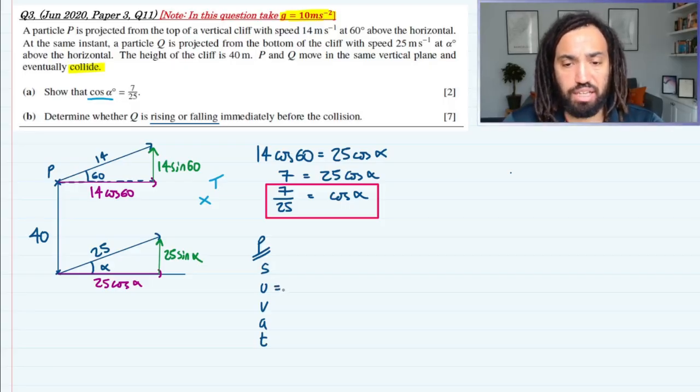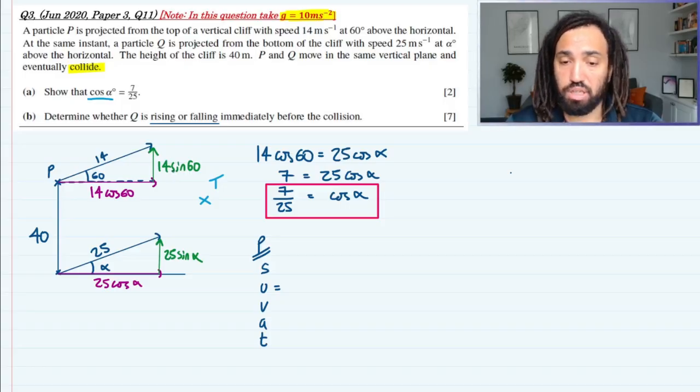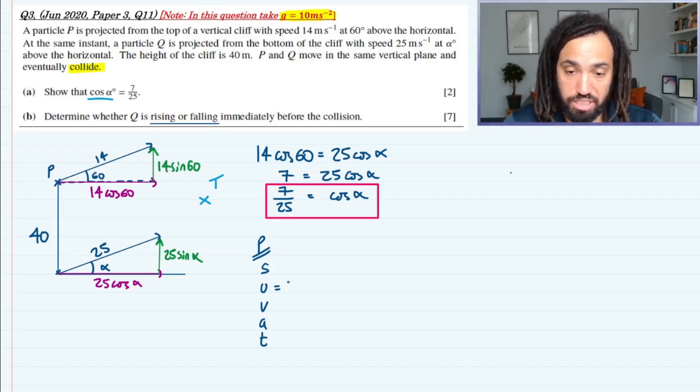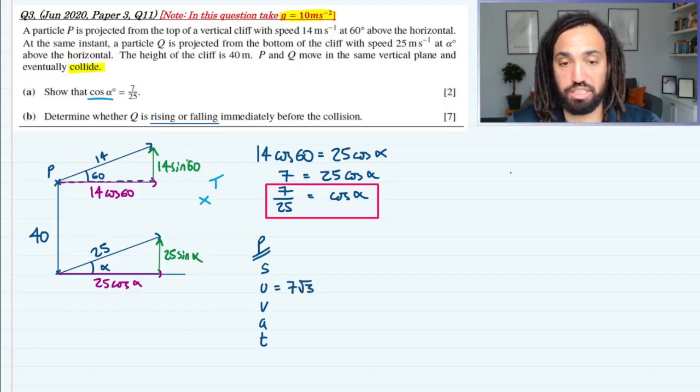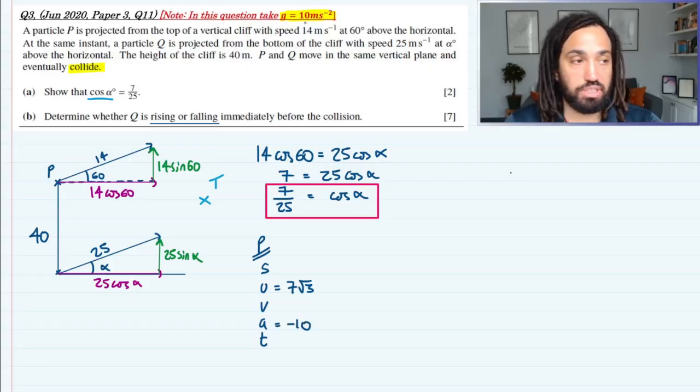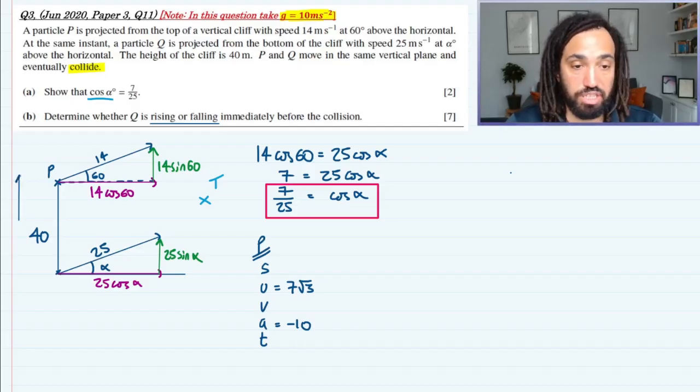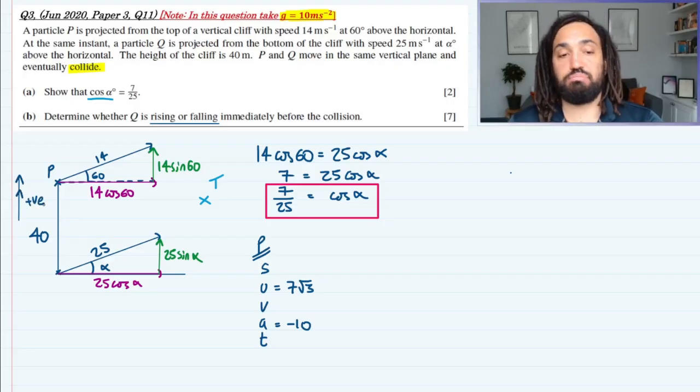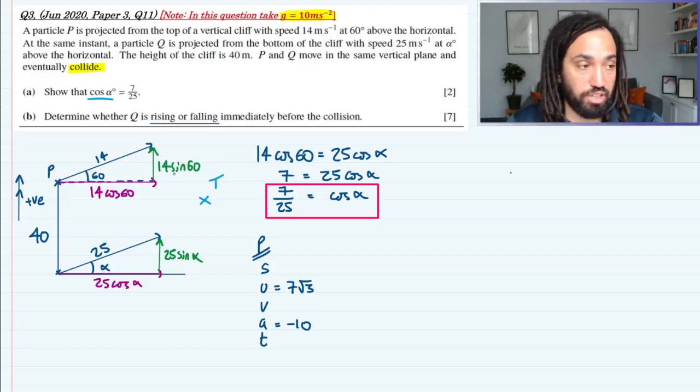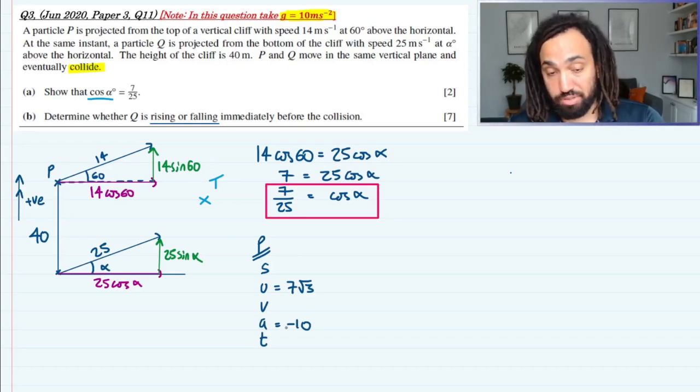So for P, we do know that the vertical initial velocity is 14 sin 60, which is the same as 7 root 3, because sin 60 is root 3 over 2. And we know the acceleration is minus 10 in the vertical because we're asked to take G as 10. Also, I probably should have said this, but I'm going to call this the positive direction, as you would kind of do for most projectile questions. So up is positive, and that's why this initial velocity is positive. It's going upwards, which means the acceleration is negative because gravity is acting downwards.